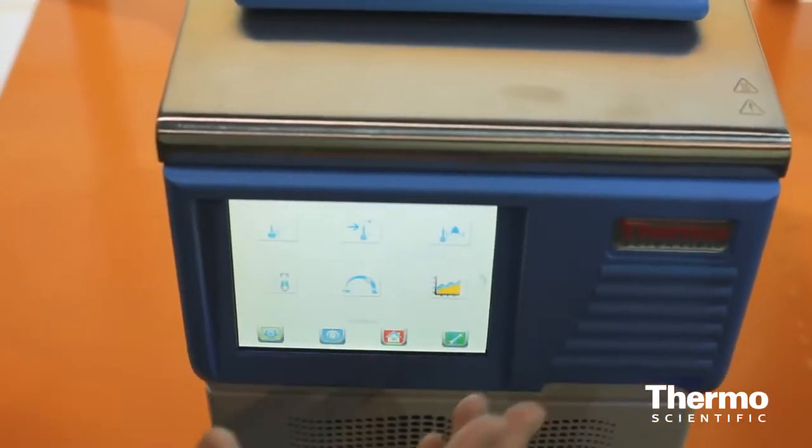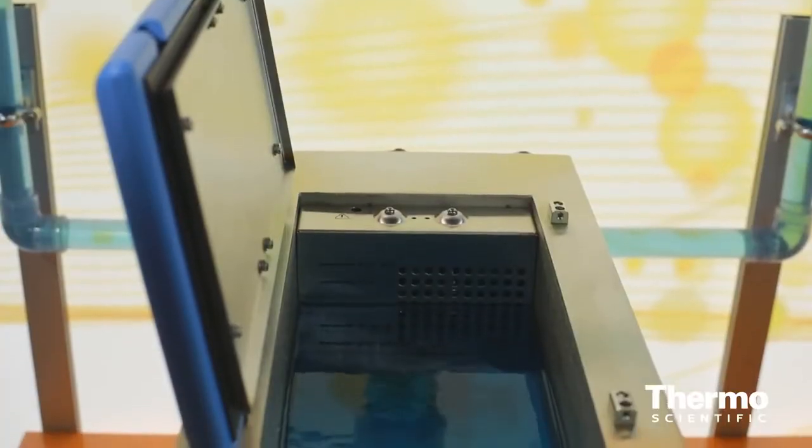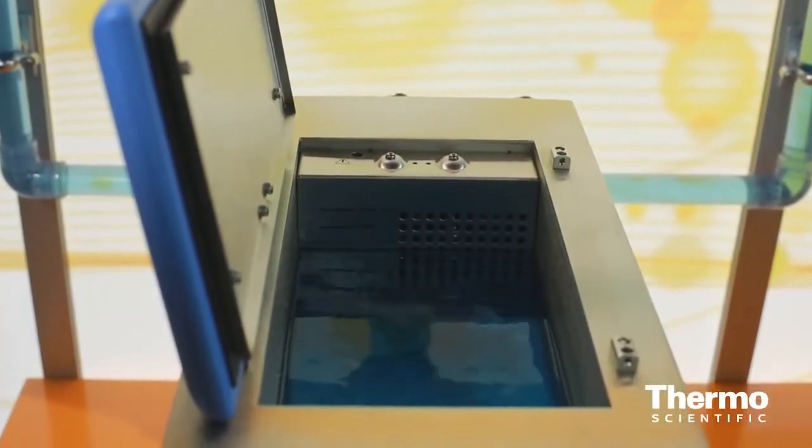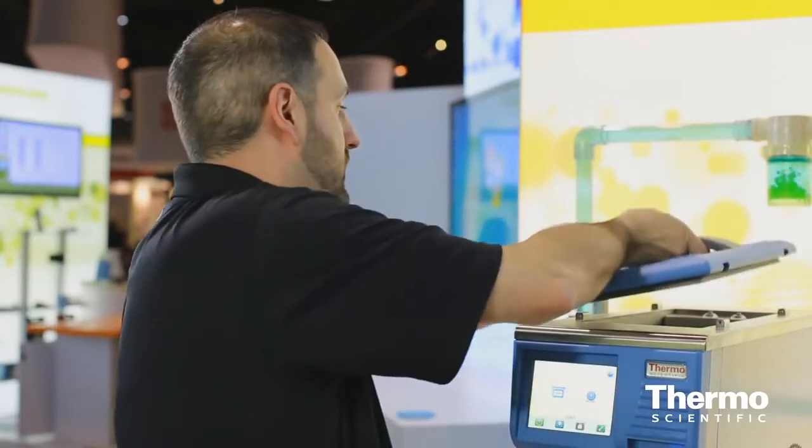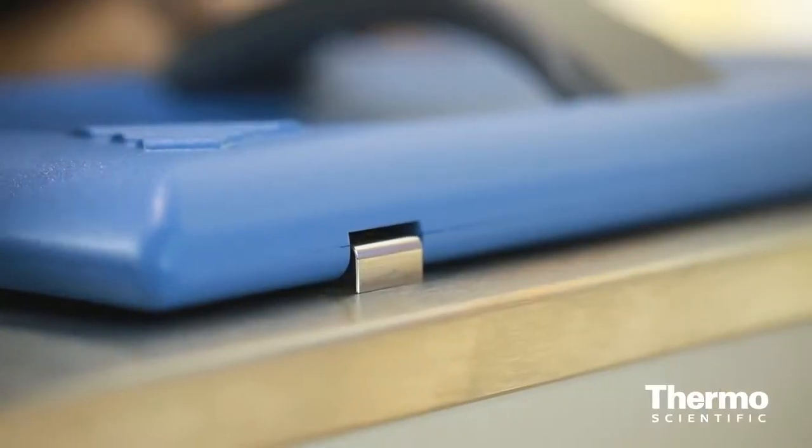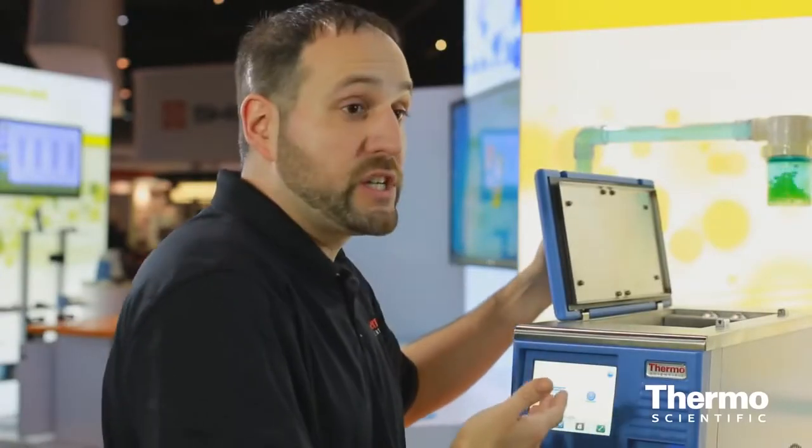You can maximize your sample size. You can maximize your capability. With the VersaLid, it's hinged. Any condensate would run back into the bath. And we've also made it for right-handed or left-handed operation.